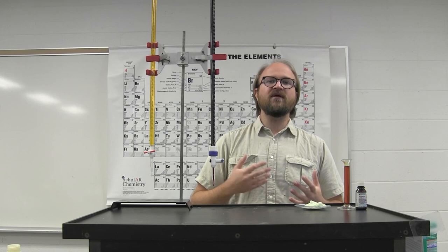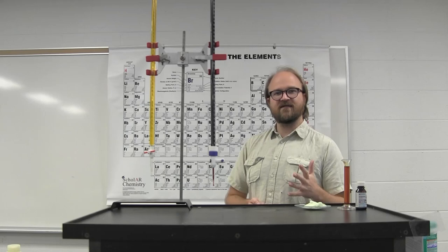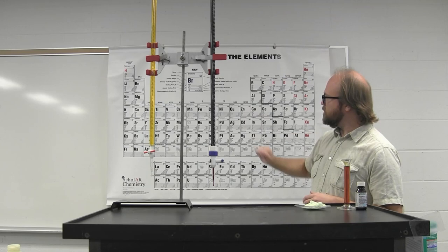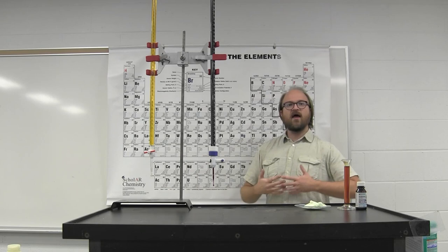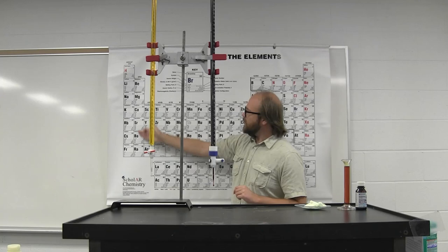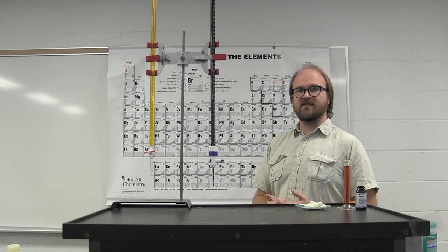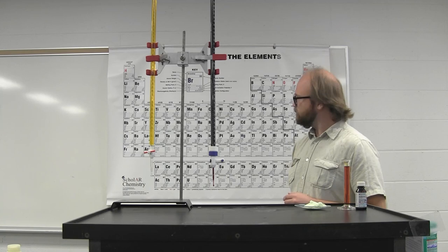Some elements really only have one oxidation state other than their neutral elemental form. The alkali metals have either zero or plus one oxidation state, while the alkaline earth metals have either zero or plus two — they lose electrons to create those ions.